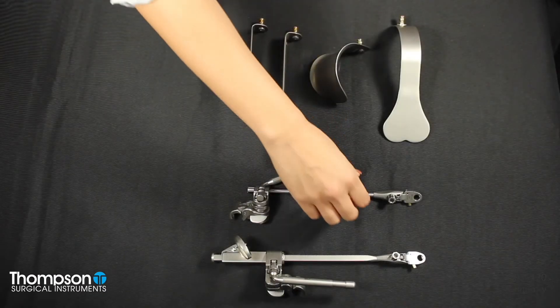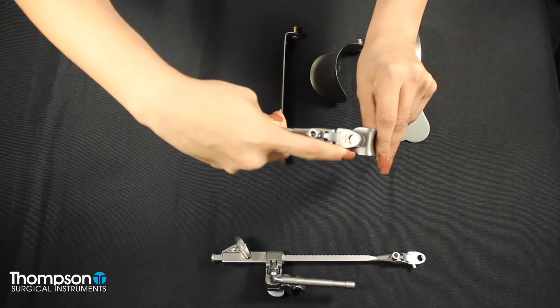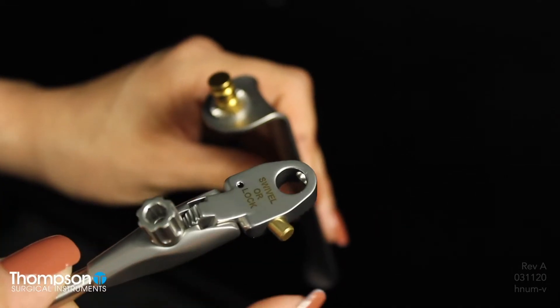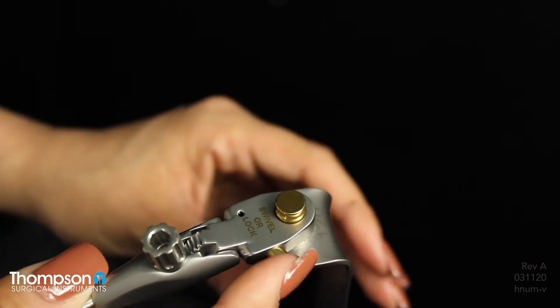Your frame setup is complete and now it's time to add your handles and blades. Select the retractor blade and handle you wish to use. While pushing the handle's plunger, insert the blade nipple. Keep in mind that this step may be done before or after attaching the handle to the frame.